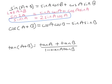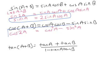Now we can do the same for the cosine one. Instead of writing B, I'm going to write A. So I've got cos of A plus A, that's cos 2A. Cos A times cos A is cos squared A, minus sine A sine A, so that's sine squared A. And that's the second double angle formula.